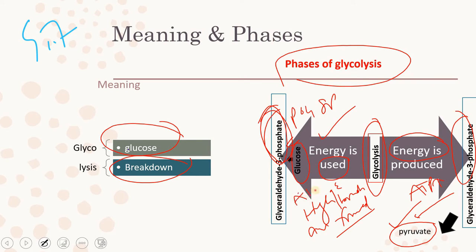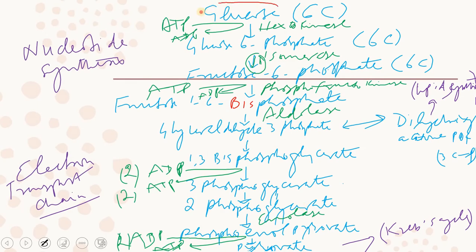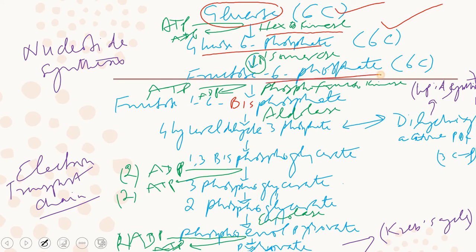In this process, ATP is generated, and in this process, ATP is consumed. One glucose molecule contains six carbon atoms. In the presence of hexokinase enzyme, glucose is converted into glucose-6-phosphate — still six carbon atoms. Then, in the presence of isomerase enzyme, it is converted into fructose-6-phosphate. This phosphate group has been incorporated from ATP.